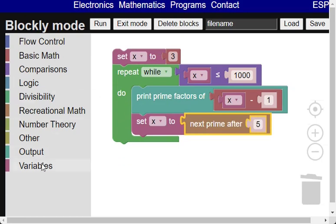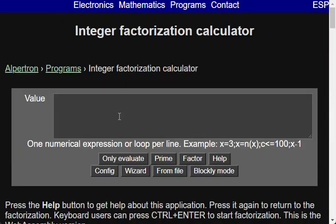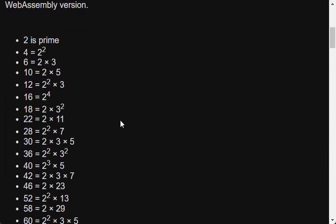Finally we overwrite the default value by the variable x. When we run the program using the run button, we will see that the calculator exits blockly mode and shows the results that can be seen by scrolling down.